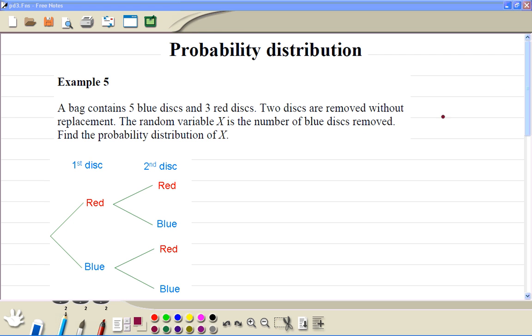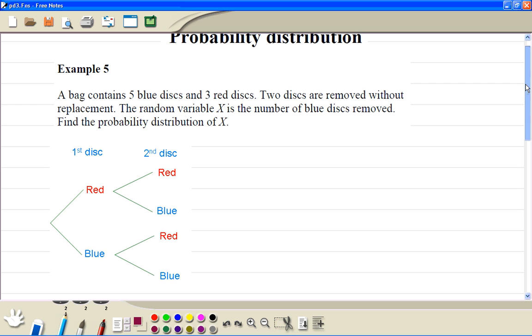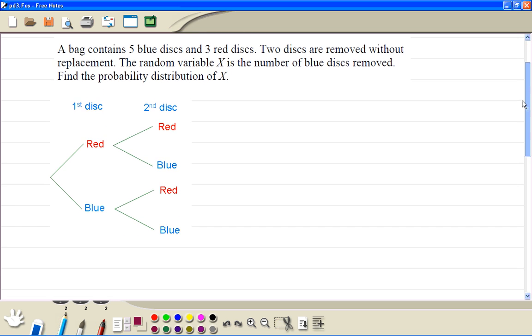Probability distribution, example 5. First we use this tree diagram to work out the probabilities. So the first disk to be red is 3 out of 3 plus 5 is 8. So this is 3 out of 8. First one is blue is 5 out of 8.